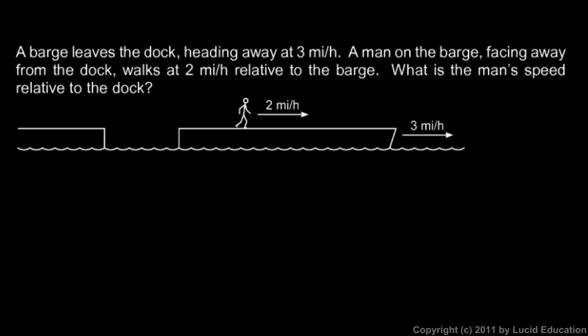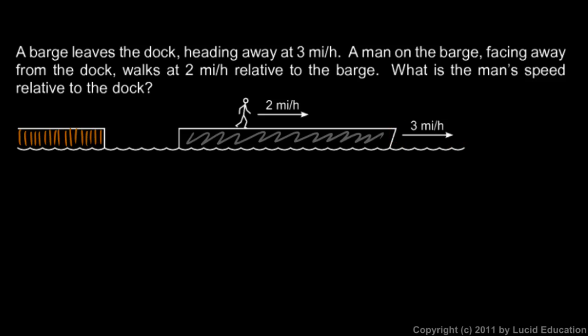In this example, a barge leaves the dock heading away at 3 miles per hour. So this is the dock over here — we'll draw some boards here, it's made out of wood. And this is the barge. You're told, and you can see in the picture here, that the barge is moving away at 3 miles per hour.